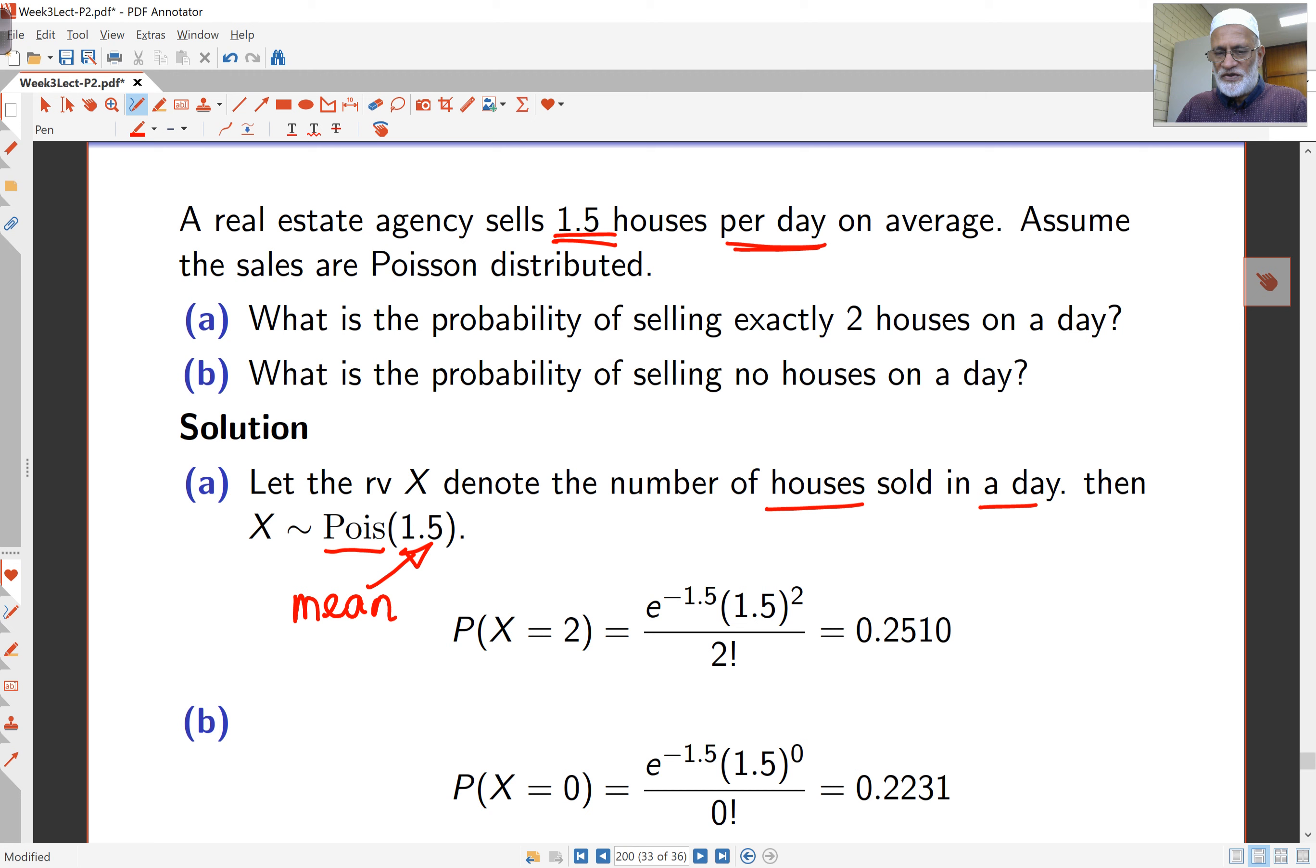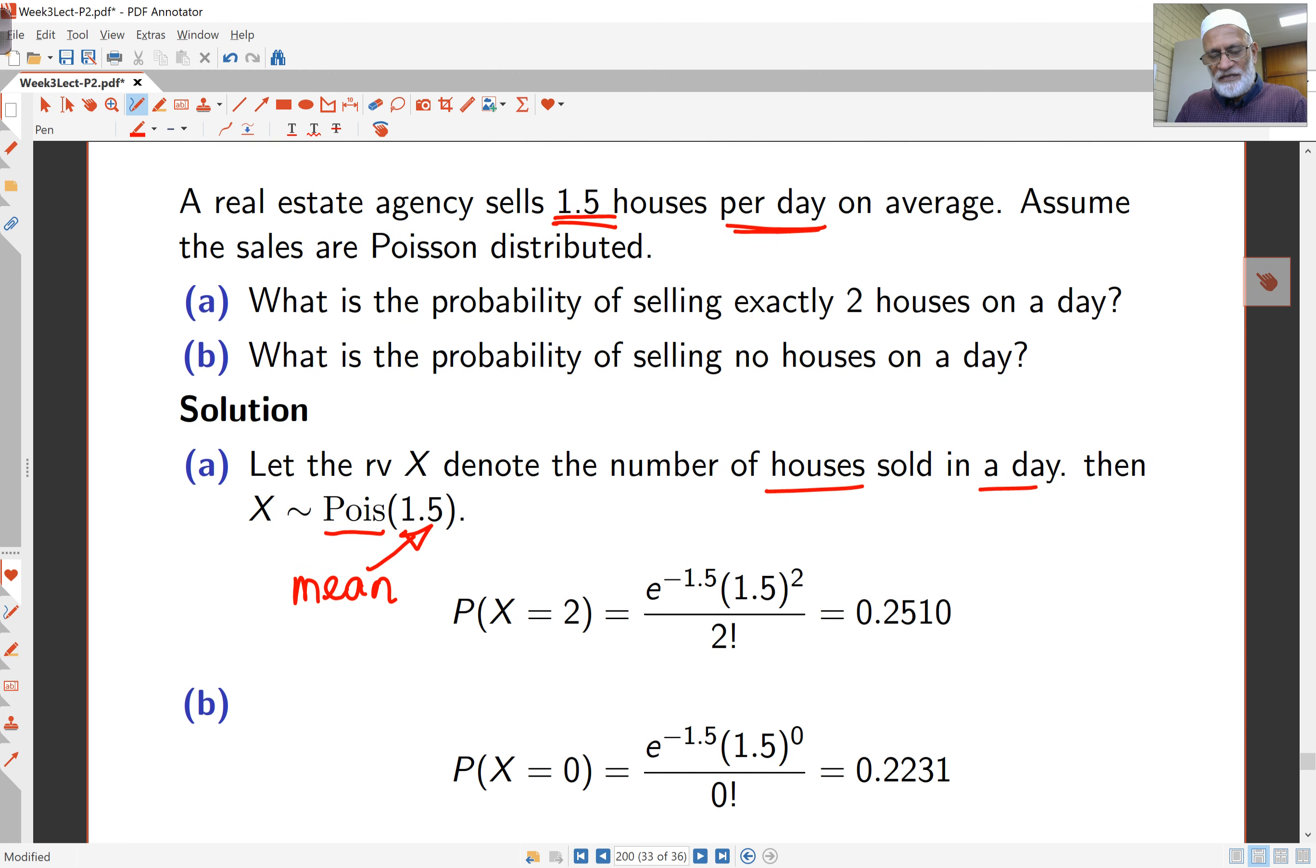Probability of X equals 2 here is given by the formula for probability mass function. It's e to the negative 1.5. The mean is the number raised to 1.5 squared, the mean squared, over 2 factorial. So we're looking at X equals 2 here. So you can see the two appears over here and over here. And this is the mean, and this here also is the mean. That calculation comes to 0.2510.